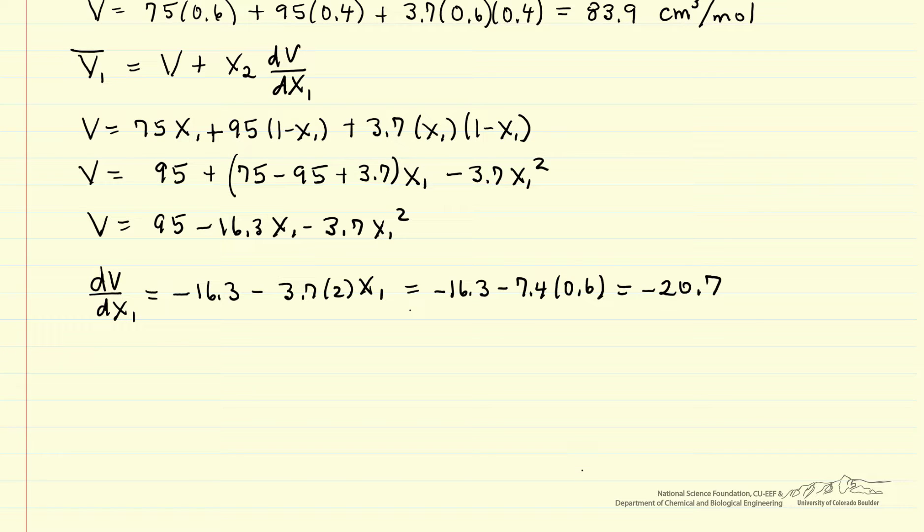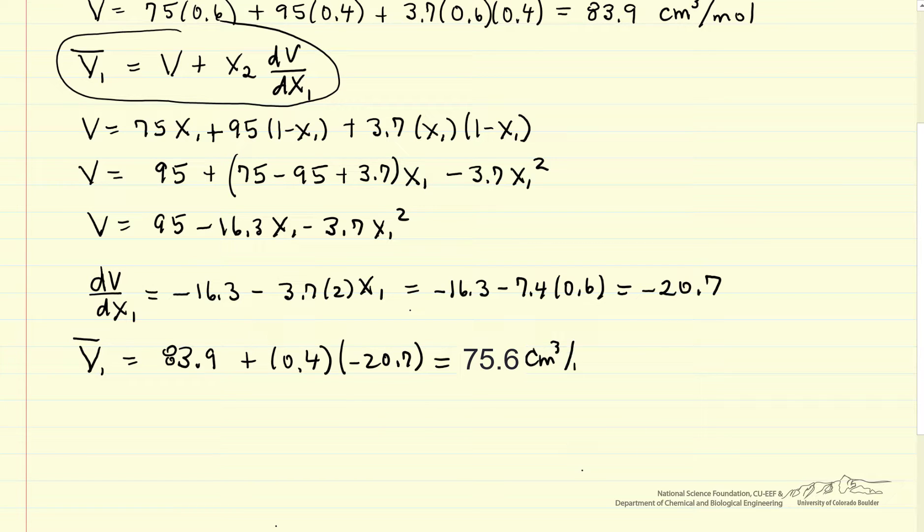Now I have all the information to substitute into this equation in order to calculate the partial molar volume of component 1. The volume we calculated is 83.9 cubic centimeters per mole, x2 is 0.4, and this derivative minus 20.7 gives us 75.6 cubic centimeters per mole.